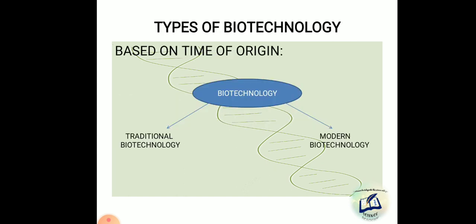Now let's learn the types of biotechnology. There are many types, so first we will learn the types based on time of origin. First is traditional biotechnology. Traditional biotechnology refers to ancient ways of using living organisms to make new products or modify existing ones. Examples include cheese, yogurt, bread, and beer.